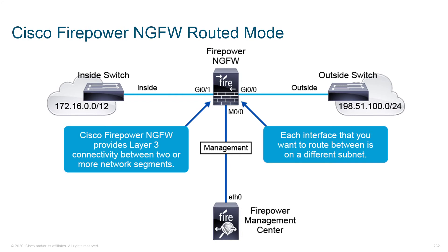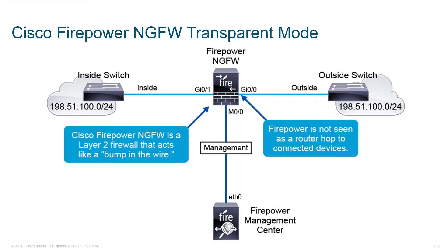When the next generation firewall works in routed mode, this is what most of you are used to when working with firewalls. We've got two different interfaces, maybe a third dedicated for management. Each hosts IP addresses which are in different subnets, so we're actually routing from one interface to another — separate layer three domains. This is very similar to using a firewall to protect your internal network from the public internet. An alternative that can be really handy for niche situations is transparent mode, or stealth mode — we talked about this briefly in the ASA section.